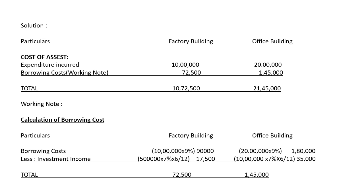For office building, investment income = 10 lakhs × 7% × 6/12 = Rs. 35,000. Deducting from Rs. 1,80,000 borrowing cost gives Rs. 1,45,000 as the office building net borrowing cost. Adding borrowing cost to expenditure: factory building total = 10 lakhs + 72,500 = Rs. 10,72,500; office building total = 20 lakhs + 1,45,000 = Rs. 21,45,000.